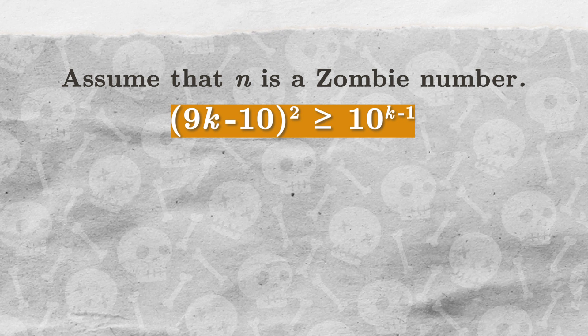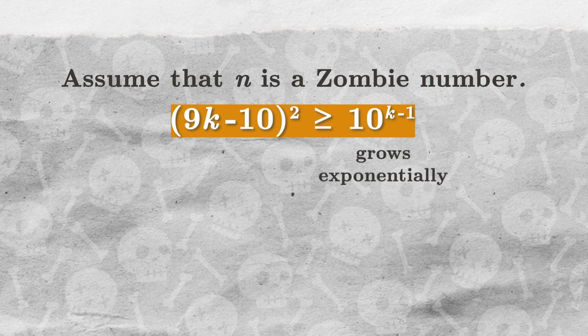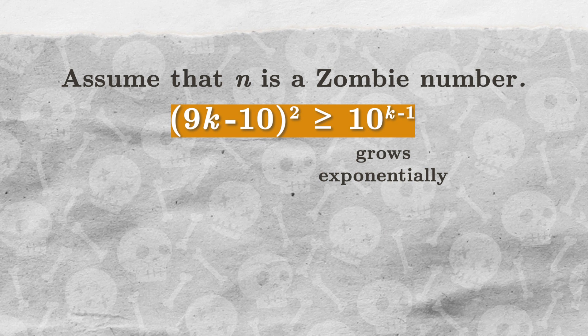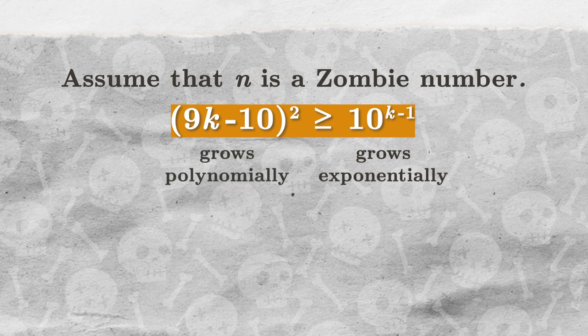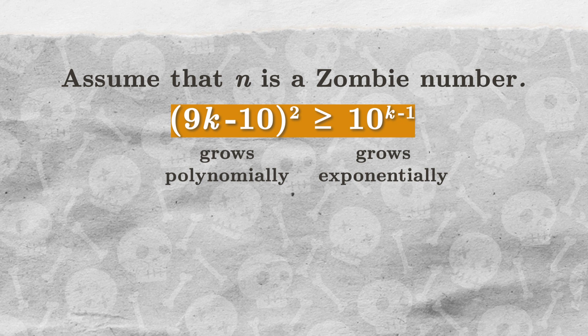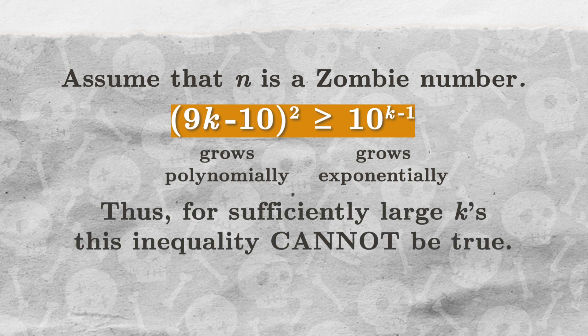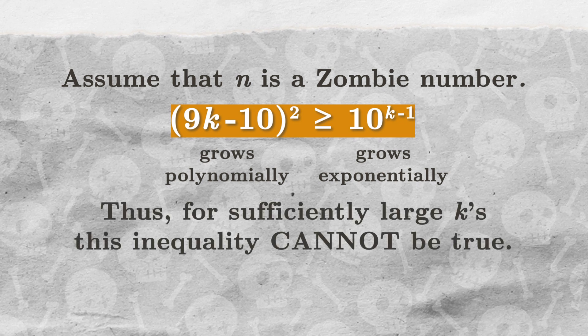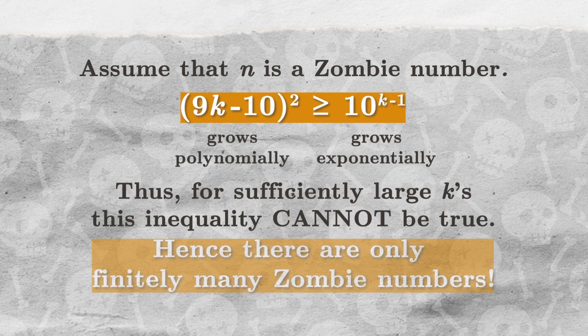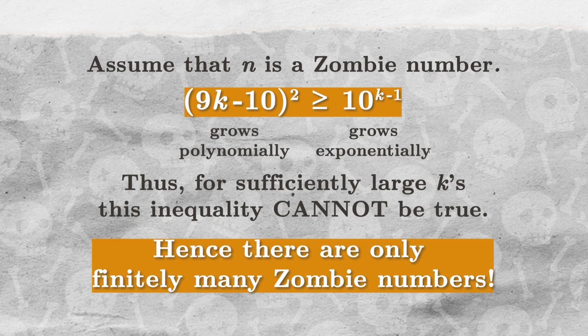Since 10 to the power of k minus 1 grows exponentially, which is faster than the polynomial growth of 9k minus 10 to the power of 2, we know that for sufficiently large cases, this inequality cannot be true. Hence, there are only finitely many zombie numbers.